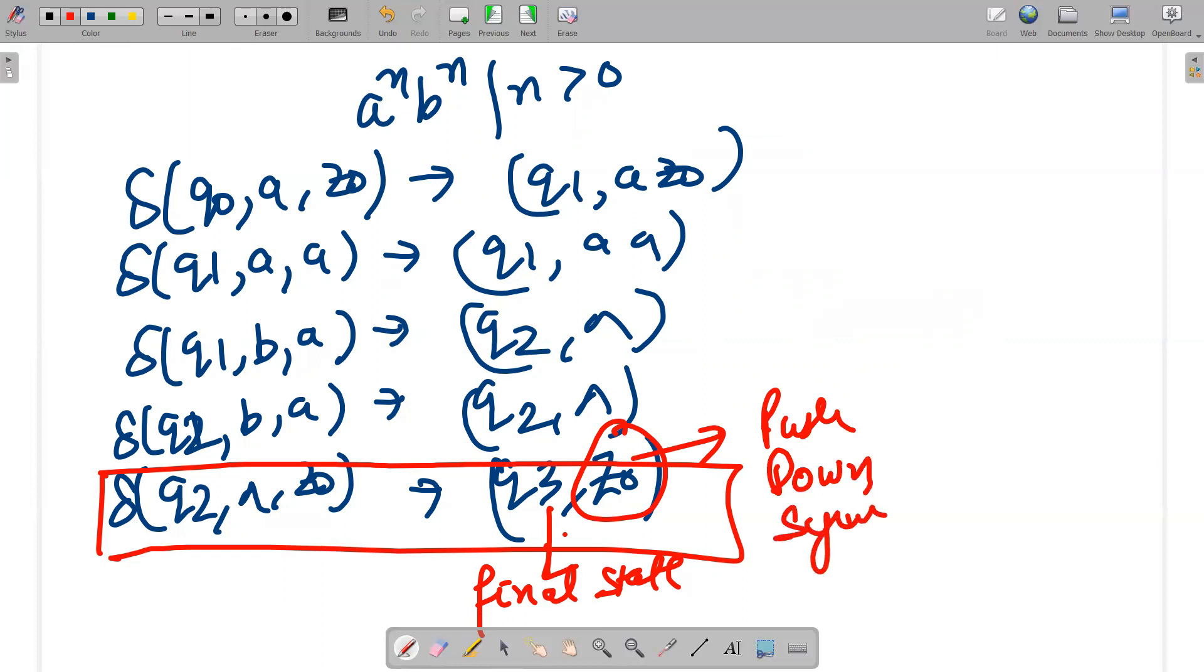This is known as final state acceptance because you reached the final state first, and your last remaining symbol